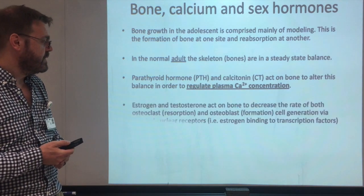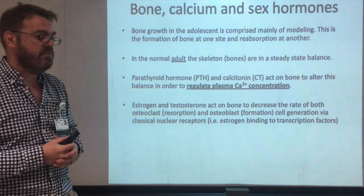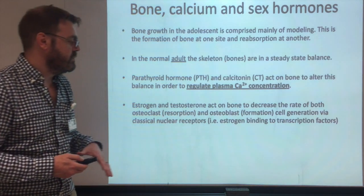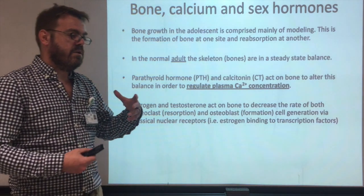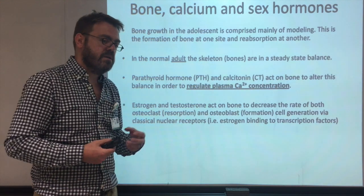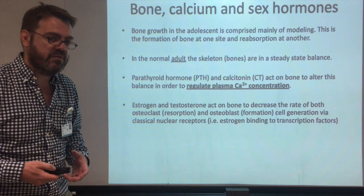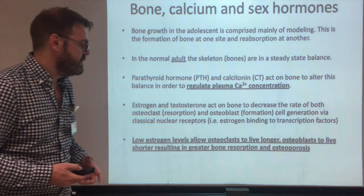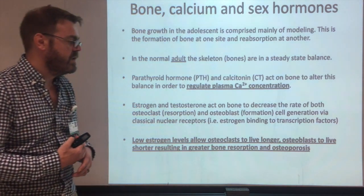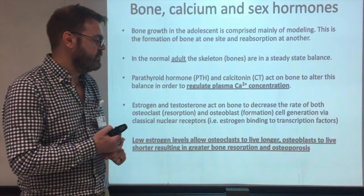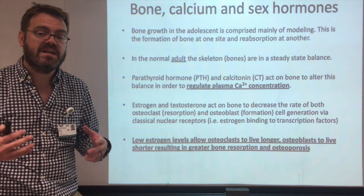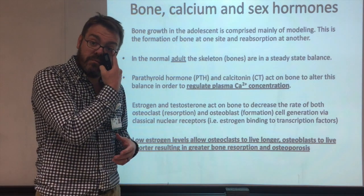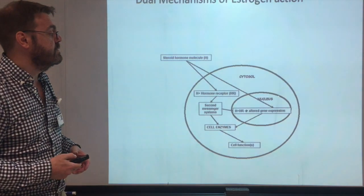Parathyroid hormone and calcitonin usually control calcium concentration, but estrogen and testosterone act on bone to decrease the rate of both osteoclast and osteoblast activity. When there is enough sex hormone, this is in balance. Once estrogen falls away, osteoclasts tend to become dominant as osteoblasts are inhibited by the lack of estrogen, causing problems with bone remodeling — weaker bones result. Low estrogen allows osteoclasts to live longer and osteoblasts to live shorter, resulting in greater bone resorption and osteoporosis.